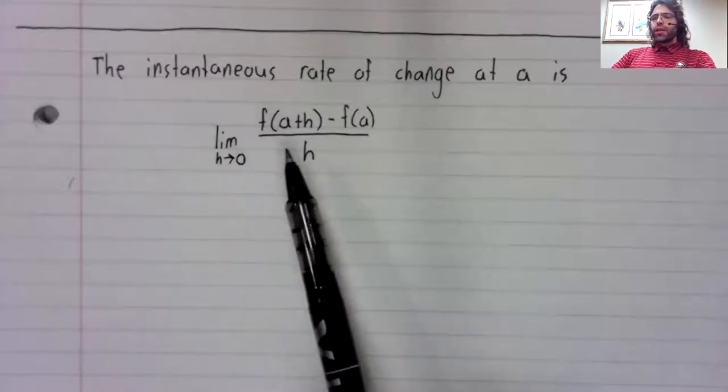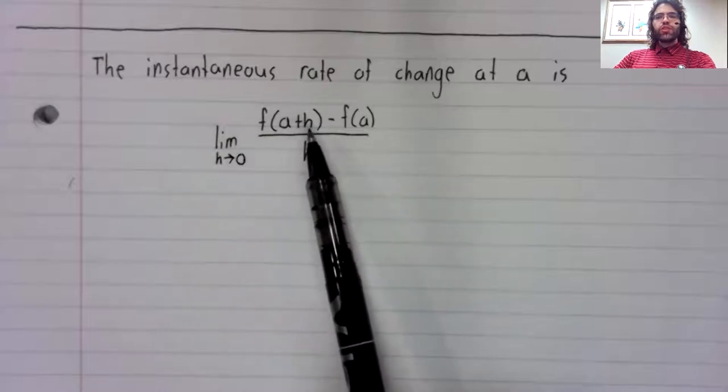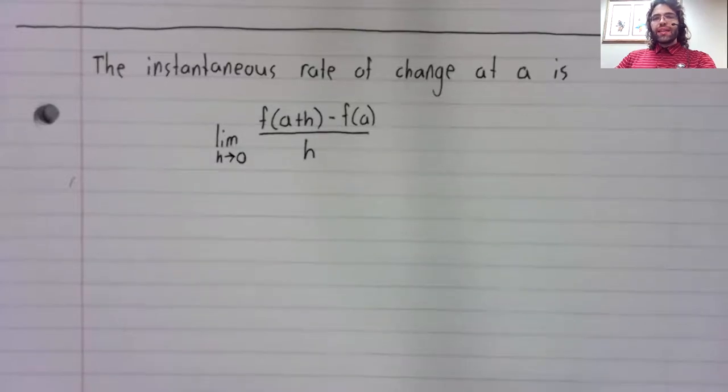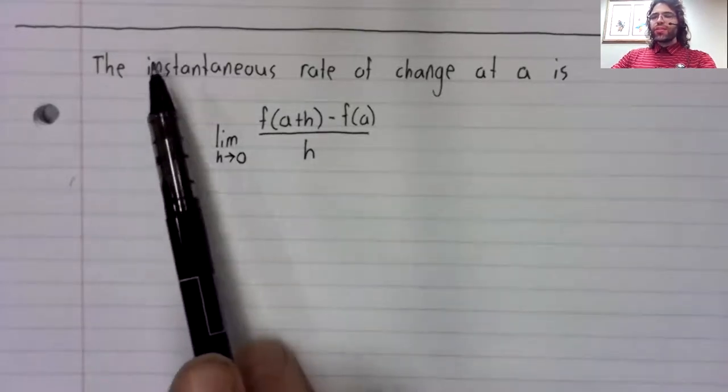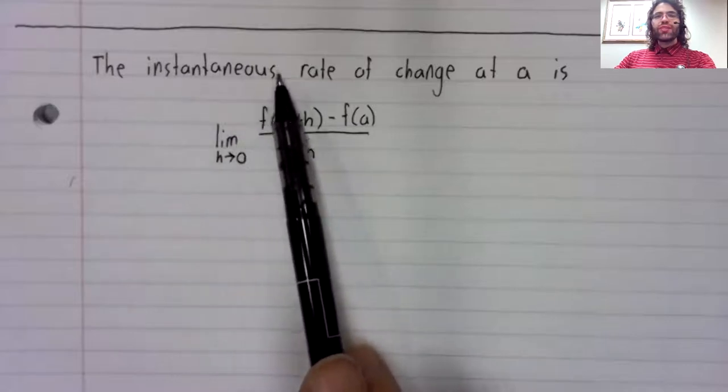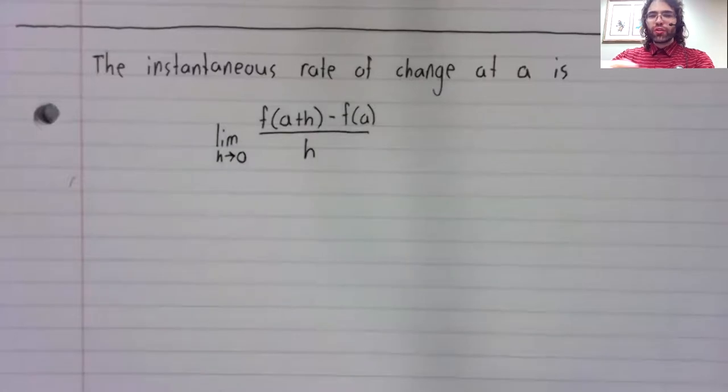And this limit gets its own piece of notation and its own name. We get a little sick of writing out the phrase instantaneous rate of change after a while.